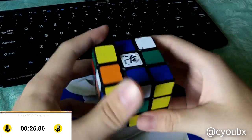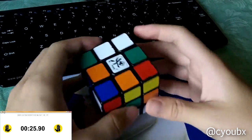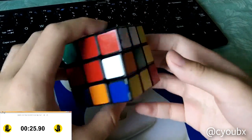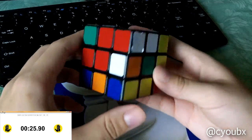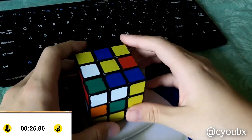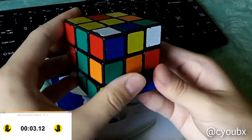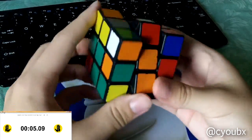The second implication is that we use the time it takes to execute an F2L case to recognize the next one. And by recognition, I mean determining the case, not simply locating the pieces. So if it takes two seconds to solve a given F2L case, we want to ideally recognize the next case within two seconds. Any longer, and we will have a pause.